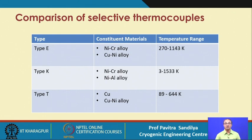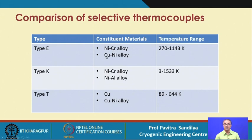There are different types of thermocouples depending on the materials chosen. Type E uses nickel-chromium alloy and copper-nickel alloy; type K uses nickel-chromium and nickel-aluminum; type T uses copper and copper-nickel alloy. All these thermocouples can operate at various temperature ranges depending on the material choice.